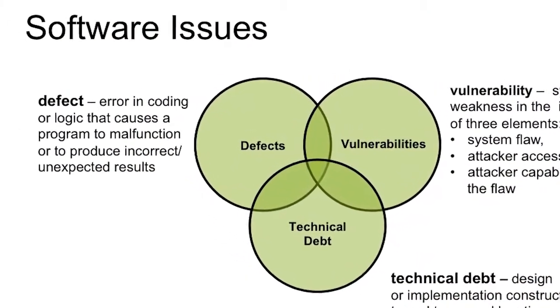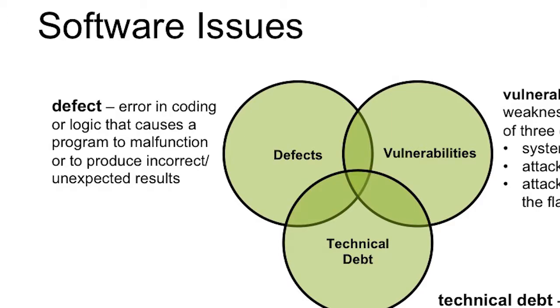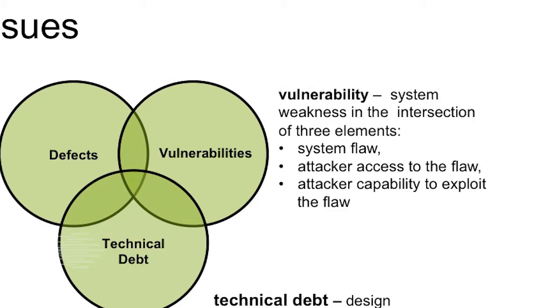Software defects or bugs represent implementation mistakes or incorrect results and they are directly linked to external quality. Vulnerabilities are related to security concerns.